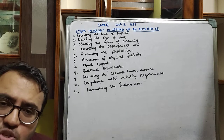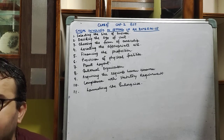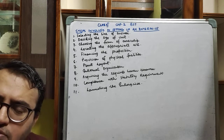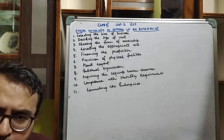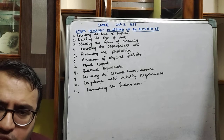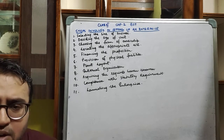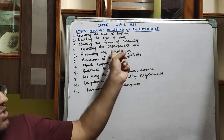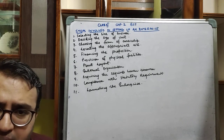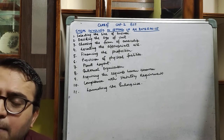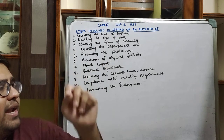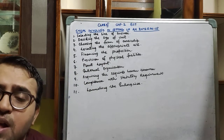Next is locating the appropriate site. While establishing an enterprise, the person needs to locate the right and appropriate site because it requires accessibility to transportation, raw materials, banking, insurance, and a customer base. Everything should be in proximity and vicinity to the enterprise, so locating the appropriate site plays a very important and vital role.